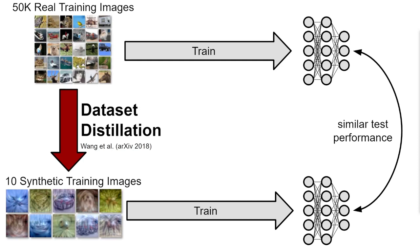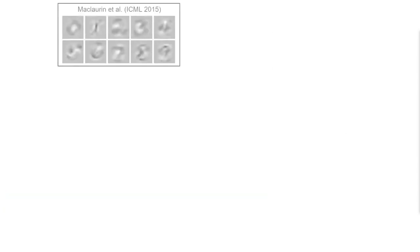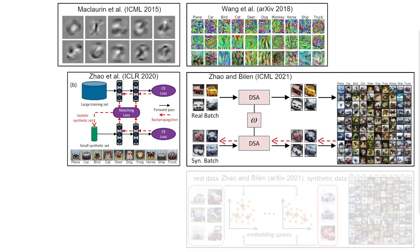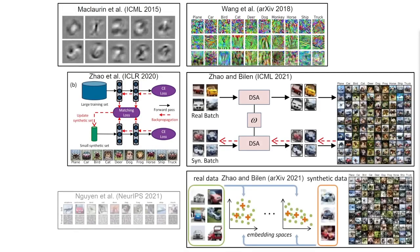Aside from simply training a model more efficiently, these synthetic images have applications in other areas such as dataset understanding, continual learning, neural architecture search, and even texture synthesis. Previous works have explored other methods of dataset distillation with varying degrees of success.